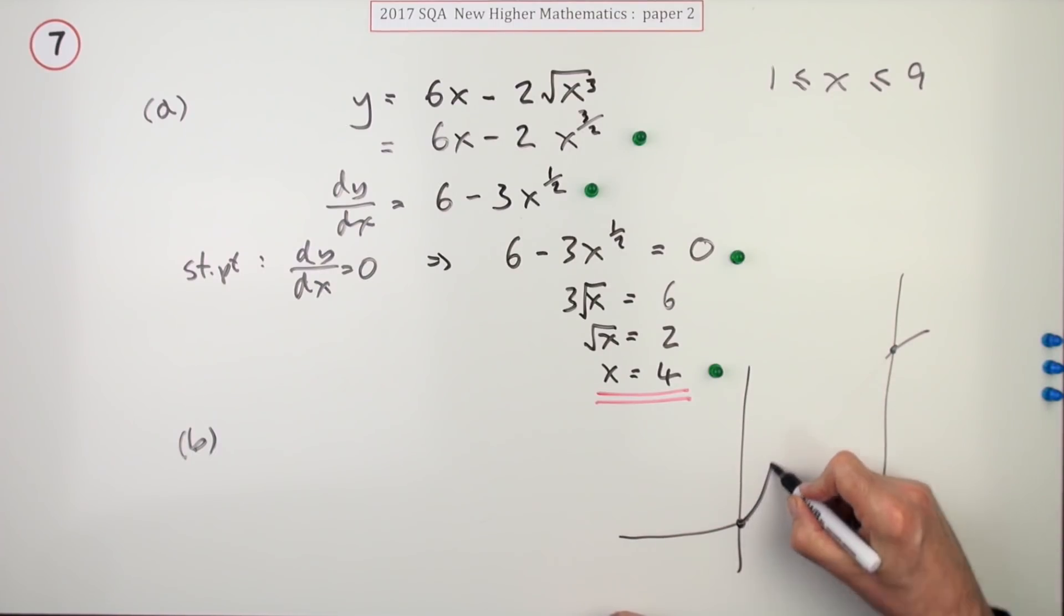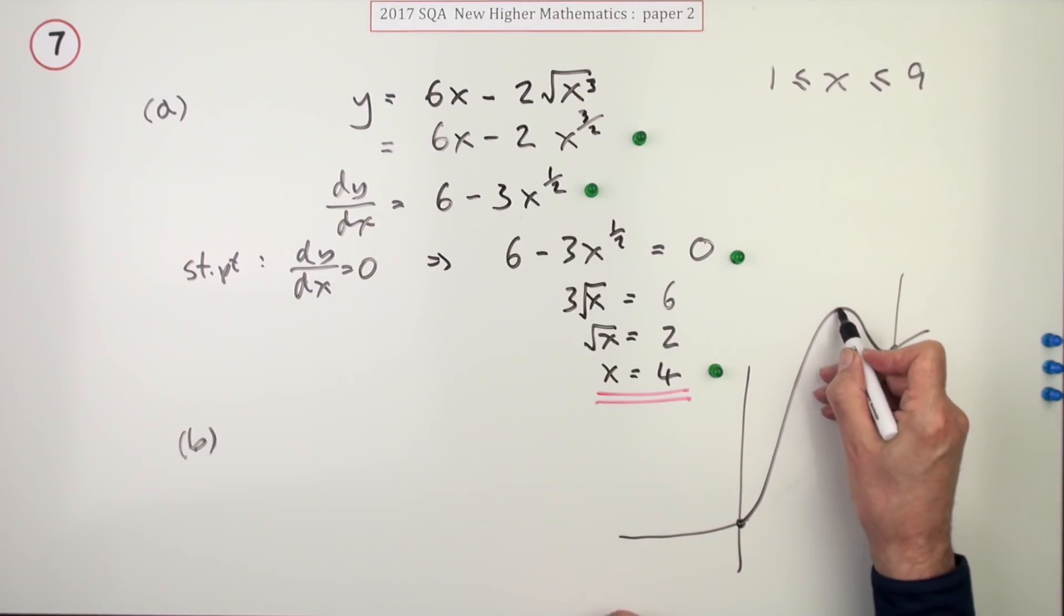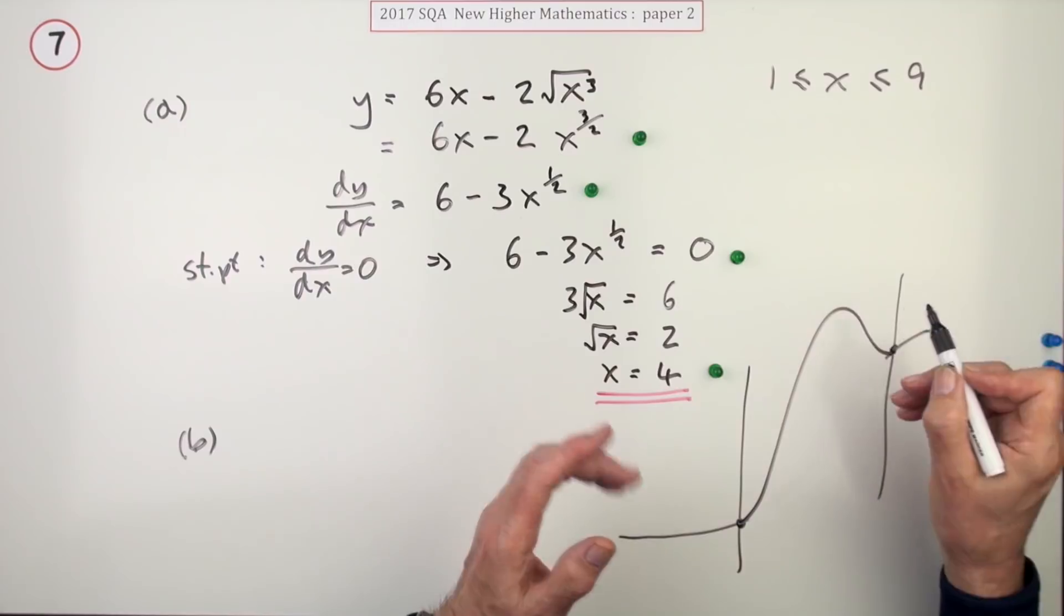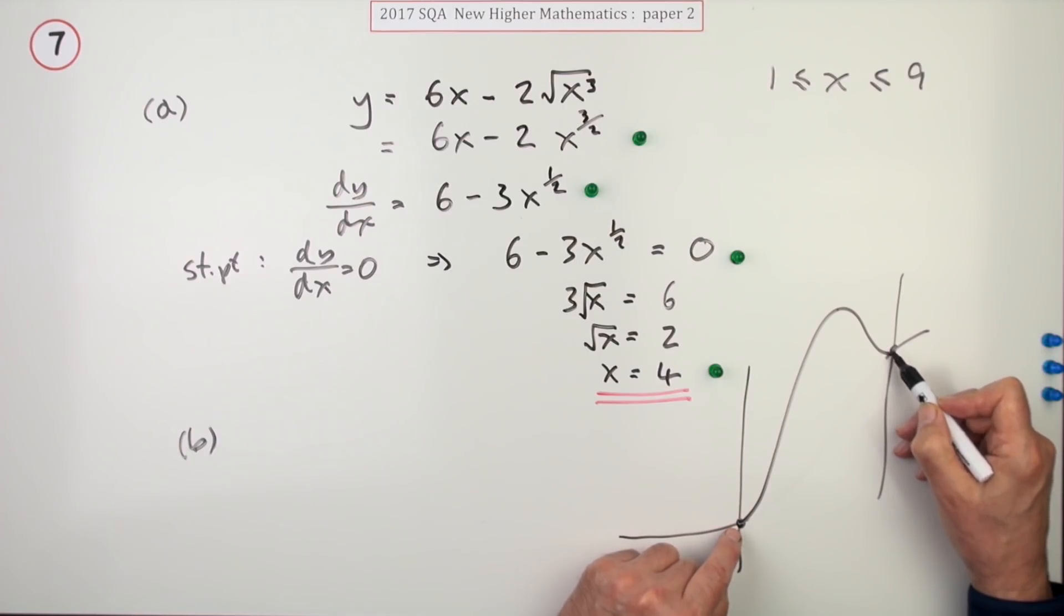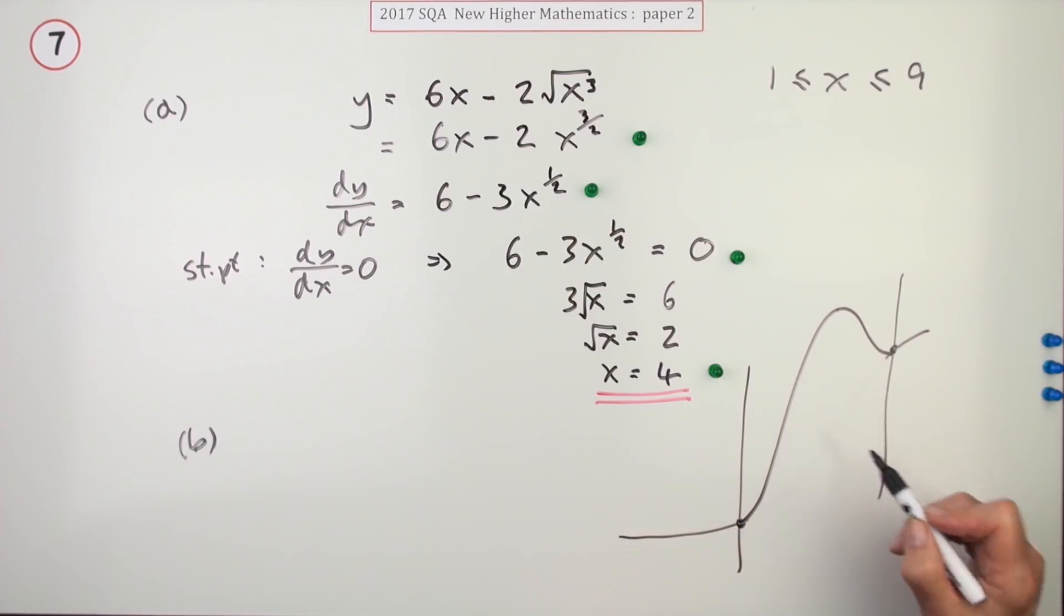The only time it might not be at one and nine would be if it has a wee twist or turn in between. And strictly speaking it doesn't matter what the nature of that twist or turn is because its value will speak for itself. The only way you could exceed these two points at the boundaries being the maximum minimum would be if you had a stationary point in between.